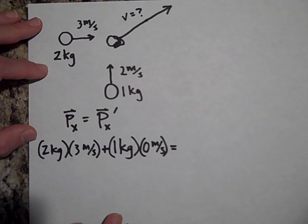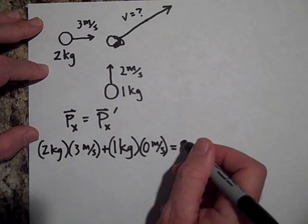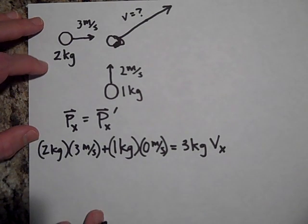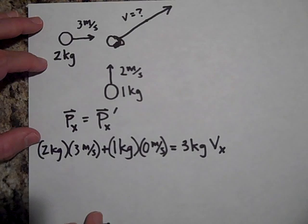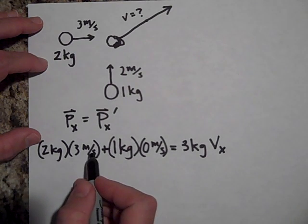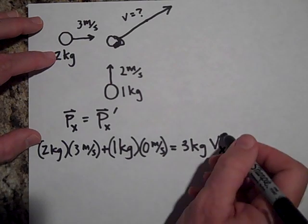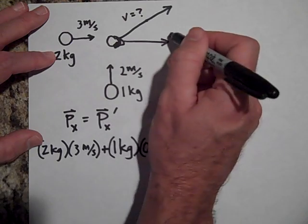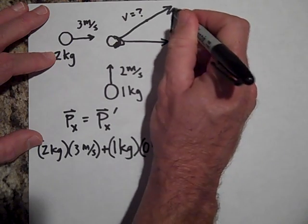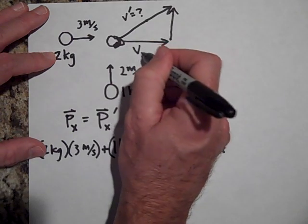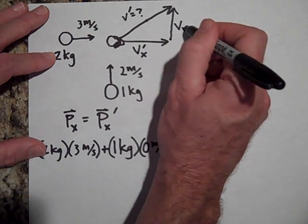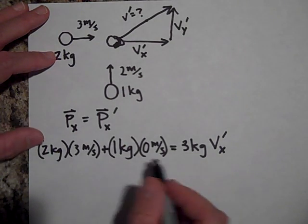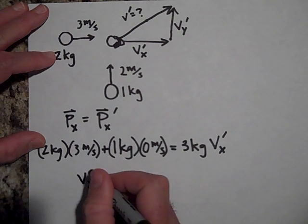That equals the combined blob, which has a total mass of three kilograms, times its velocity in the x-direction — we'll call that vx prime. So we have six kilogram-meters per second equal to three kilograms times vx prime. If I break the final velocity vector into x and y components, vx prime equals two meters per second.